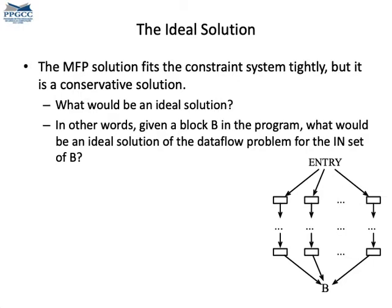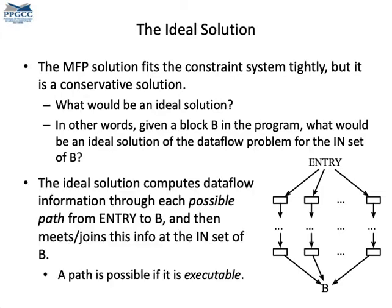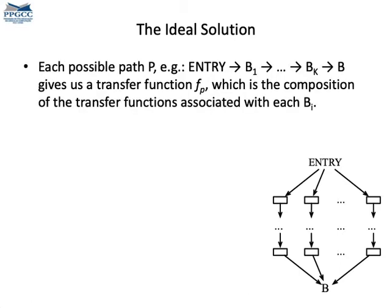The maximum fixed point — MFP for short — is an approximation of the program, but it's conservative. To find an ideal solution about the behavior of the program, we could compute the data flow facts separately about every possible path — every path that can actually execute during a run of the program. We can run a data flow analysis independently per possible path, and once we have this for every possible path, we will know if the property is true according to the data flow analysis. We can imagine a transfer function for every possible path in the program.